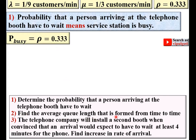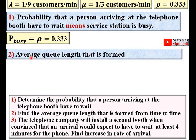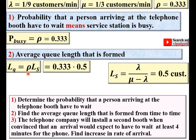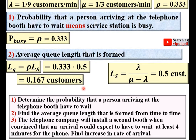For question two, find the average queue length Lq. We use the formula Lq = rho × Ls. First we find Ls = lambda / (mu − lambda). Substituting the values gives Ls = 0.5 customers. Then Lq = 0.333 × 0.5 = 0.167 customers. That is the average queue length.